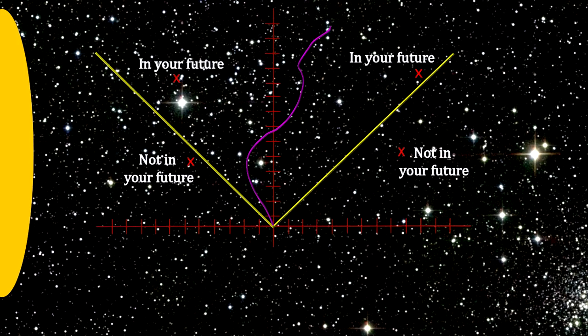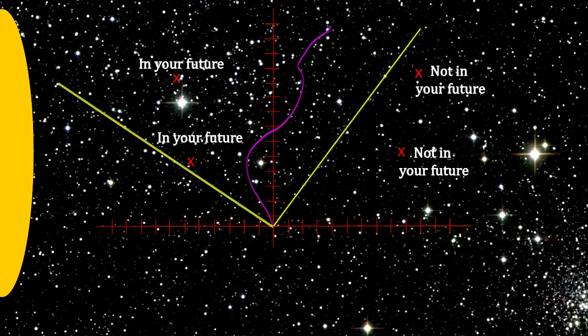Now suppose there is a great mass energy density to the left of the cone. The light would be bent in its direction. We see that points that were impossible to reach before now fall inside the light cone and are reachable.